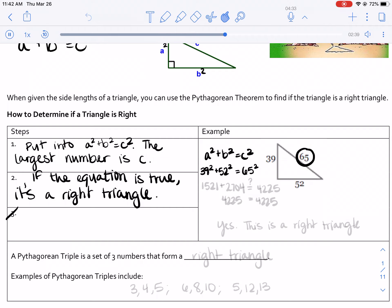And then we're going to test it out. We're going to find out what 39² equals and what 52² equals and see if those two added together equals whatever 65² equals.